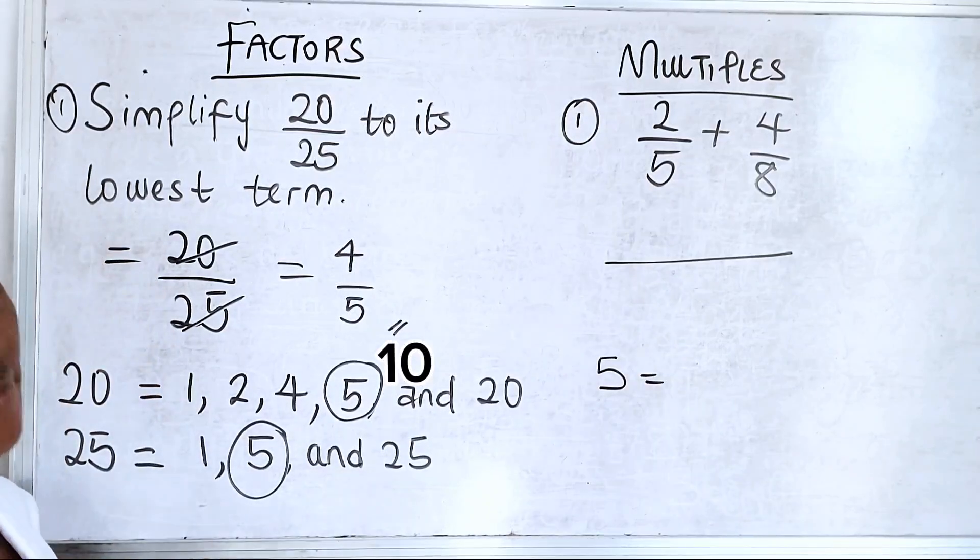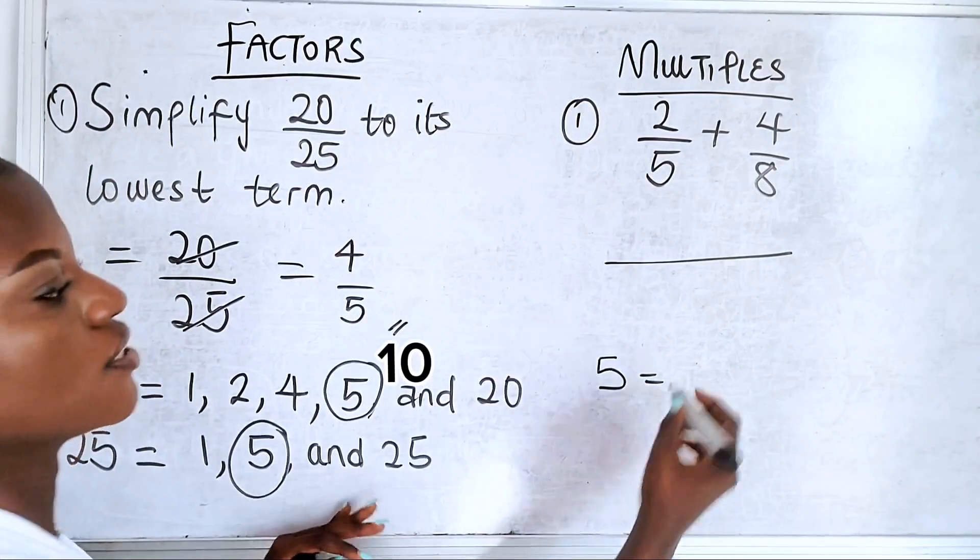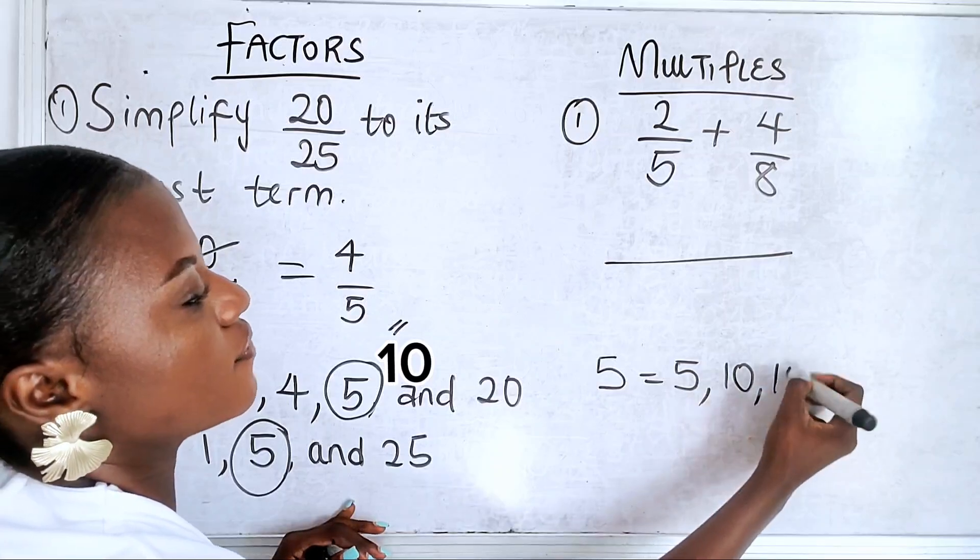What can go here and go here without any remainder. The multiples of 5, we said it's your multiplication table. 5, 10, 15, 20...